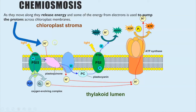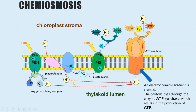That energy is used to pump protons across the membrane. Protons within the stroma of the chloroplast are actively transported across that membrane into the thylakoid lumen or intermembrane space. This results in a high concentration of protons in the intermembrane space, and we're also getting protons from the photolysis of water, so we end up with lots of protons on this side of the membrane and very few in the stroma on the other side.